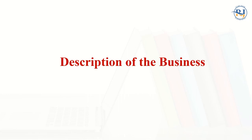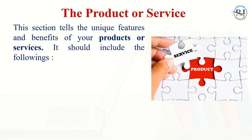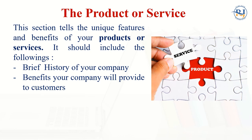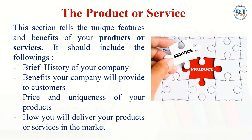Now, what is the description of the business? The description of the business is divided into two parts. The first one is the product or services. This section tells the unique features and benefits of your product or services, and it should include: a brief history of your company, the benefits your company will provide to customers, what will be the price and uniqueness of your product, and how you are going to deliver your product or services to your consumers.